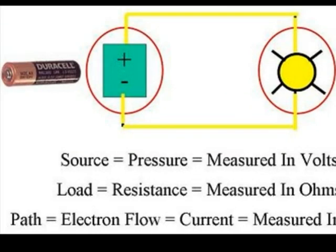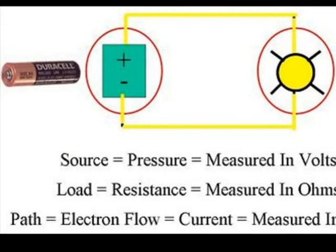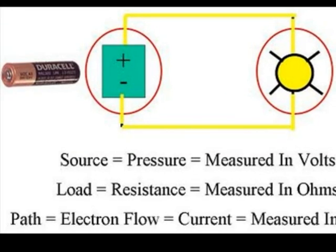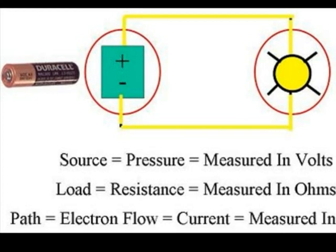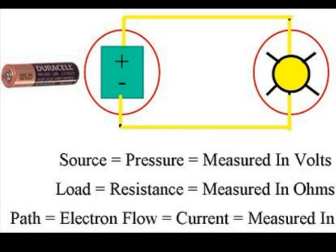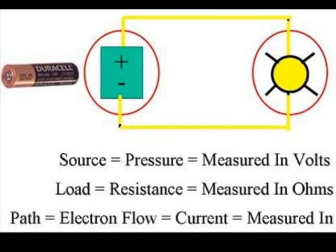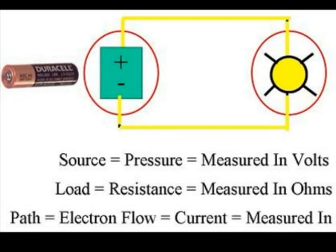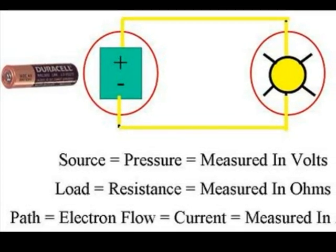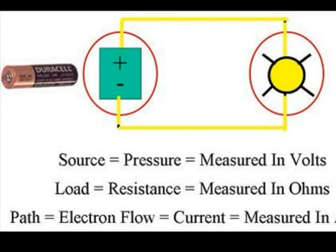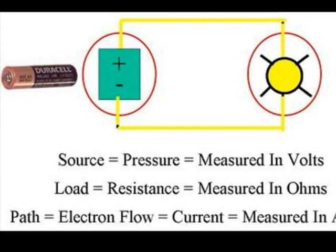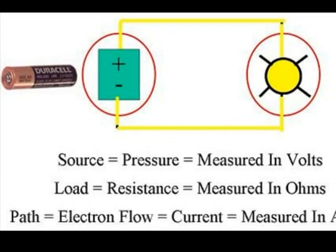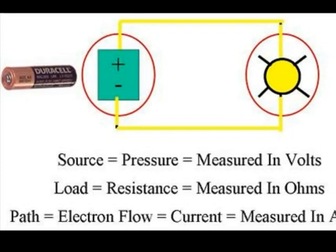Let's recap. All circuits need three things: source, load, and path. Our source is our energy source, measured in volts. Our load is any device doing work for us.